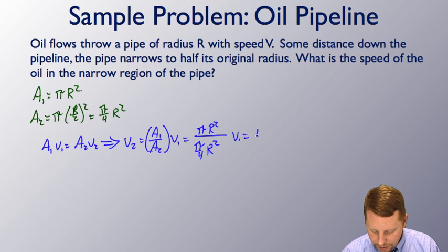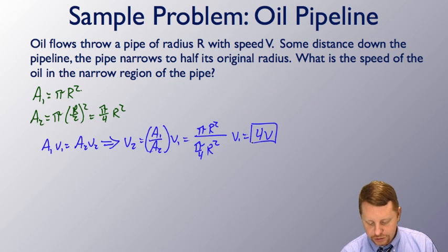So we're going to get a velocity of 4 times our initial velocity when we cut down that radius to half of what it was before. 4 times the velocity because of that squared relationship in the area.